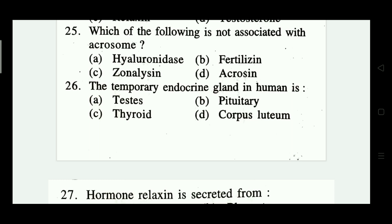Question number twenty-six: the temporary endocrine gland in humans is — testes, pituitary, thyroid, corpus luteum. Which one is correct? Corpus luteum is the correct answer.